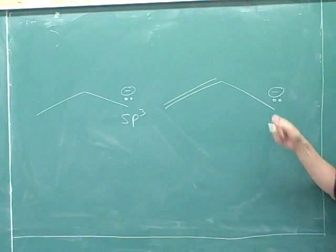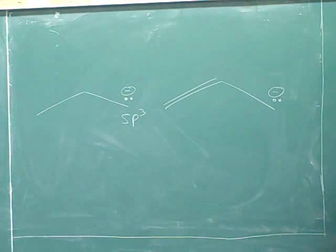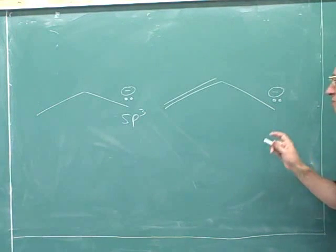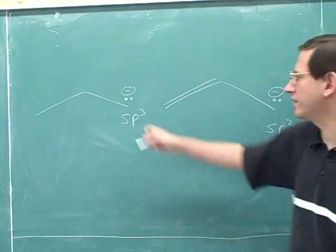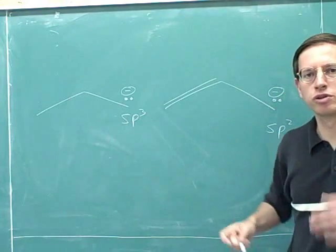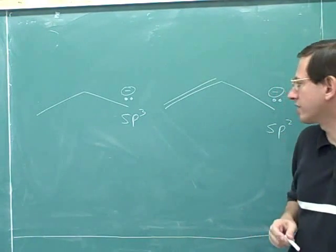What is the hybridization of this carbon? This is sp2. Why is it sp2, even though it looks a lot like this carbon? Because of the exception to the rule for hybridization that we've learned earlier.